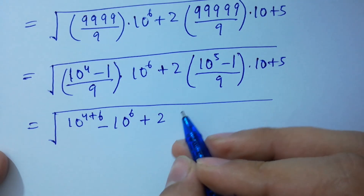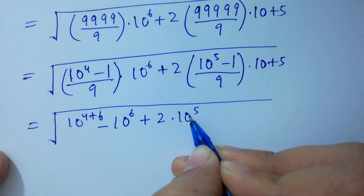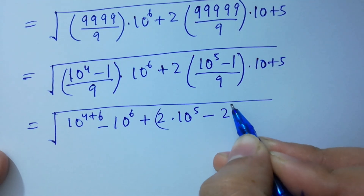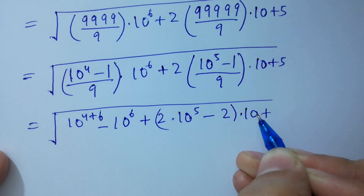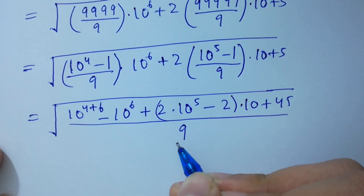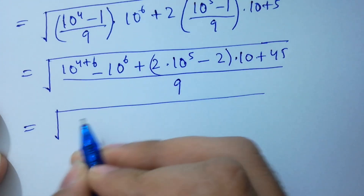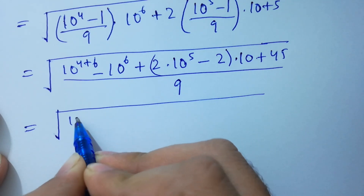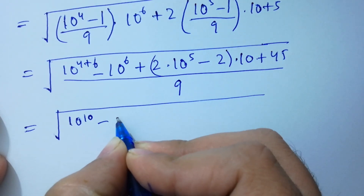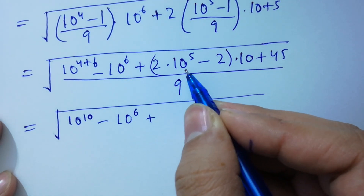...2 times 10 to the power 5, times 10 to the power 5, minus 2 times 1, 2 times 10 plus 9 times 5 — 45. We have taken the LCM of 9. Next: 10 to the power 6 plus 4, 10. Next: 10 to the power 6 plus here 2 times 10 to the power 5.